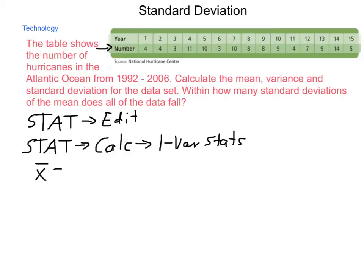That x bar, in this case, is 7.26, and that 6 is repeating, so we would round up to 7.27.